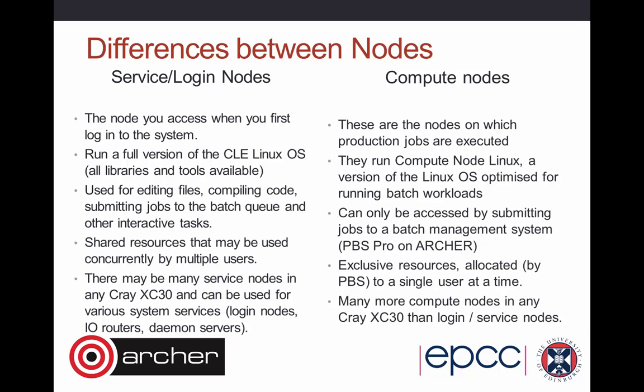Once you've created your job, you submit it for execution on the compute nodes. These are where your production jobs are executed. They also run Linux, but they run a version called Compute Node Linux, produced by Cray — a stripped-down version of Linux optimized for large batch workloads. You're not going to be running graphical interfaces on the back-end nodes. The interface from your login node to the compute node is through a batch system, and on Archer we use PBS Pro. Importantly, the compute nodes are allocated exclusively — you're allocated an entire node or multiple nodes for the duration of your job and will not share them with other users. This means you have full access to all CPU cores and all memory, making job runtime and performance more reproducible.